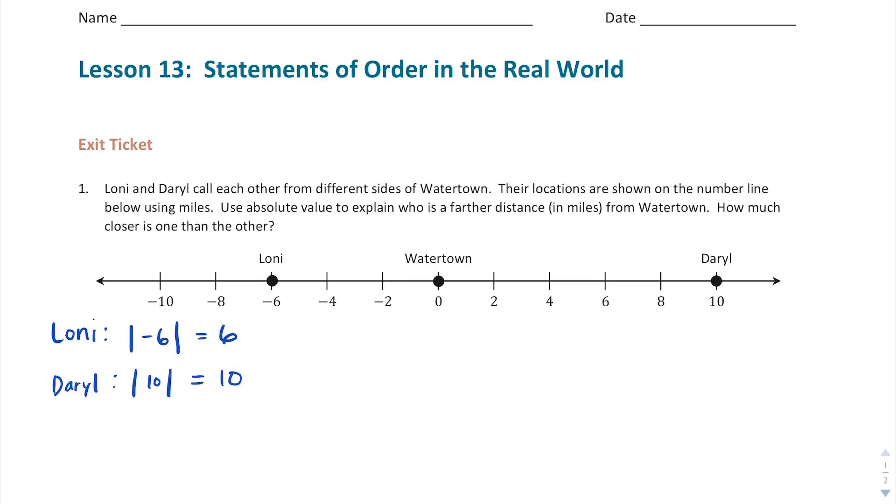How much closer is one than the other? Well, if Daryl's 10 miles away and Lonnie is six miles away, how much farther? Well, we can simply subtract, and the answer is four. So let me go ahead and respond to that. Daryl is four miles farther from Watertown than Lonnie.